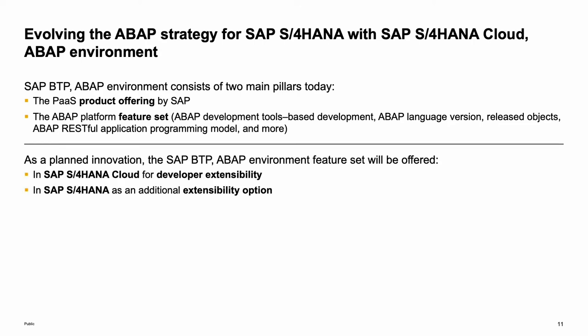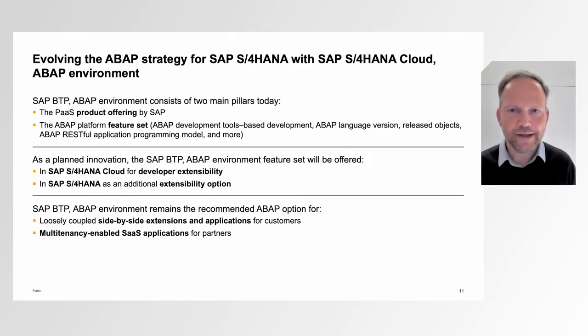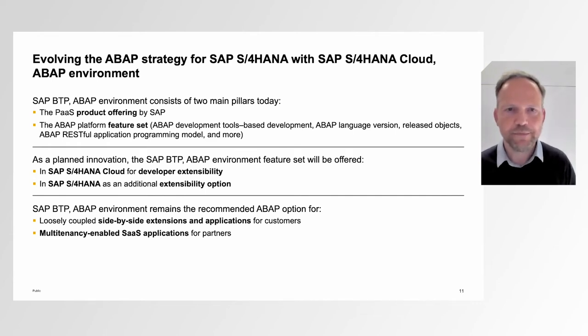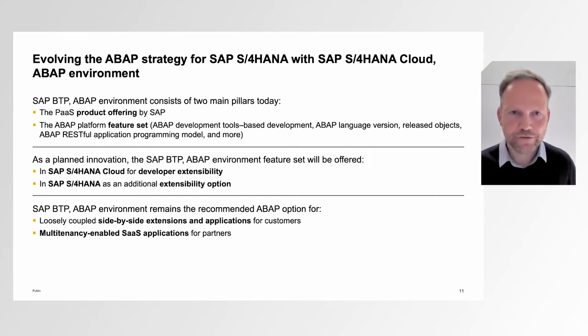We incorporated the feature set into S/4HANA. This means that in S/4HANA Cloud we now have a new feature set for developer extensibility, and in S/4HANA an additional extensibility option. The sweet spot and main purpose of Steampunk remains exactly the same: Steampunk on BTP is intended for loosely coupled side-by-side extensions and applications for customers, and multi-tenancy enabled SaaS applications for partners. This remains completely unchanged.